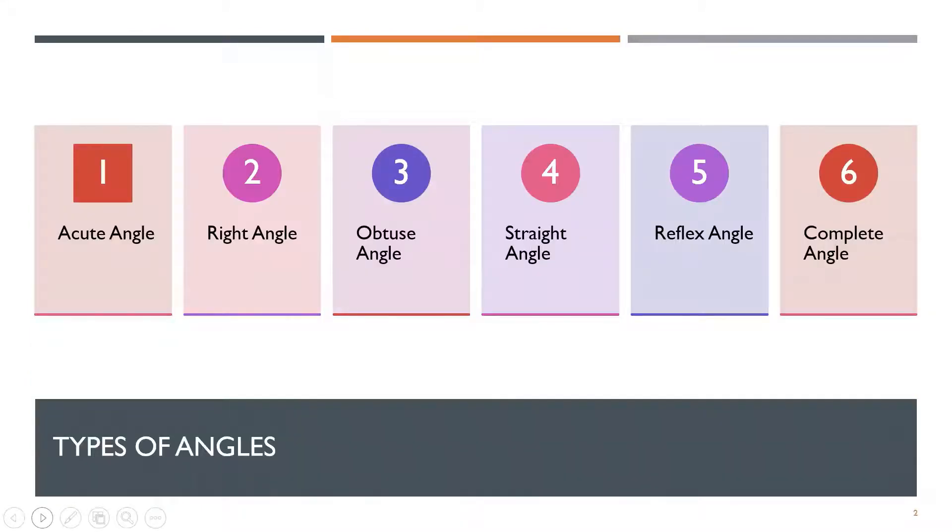There are six types of angles which are acute angle, right angle, obtuse angle, straight angle, reflex angle and complete angle.